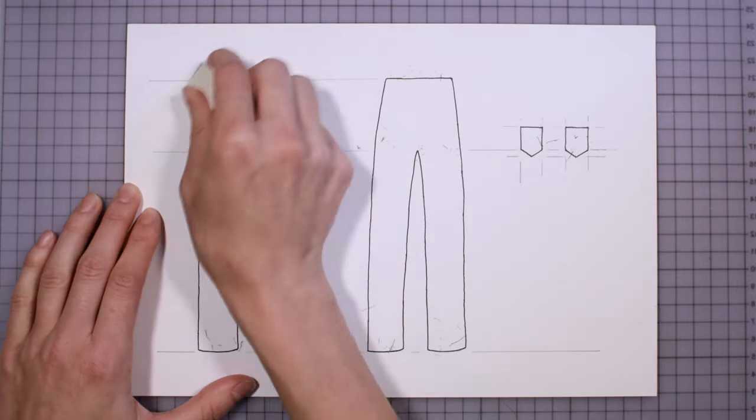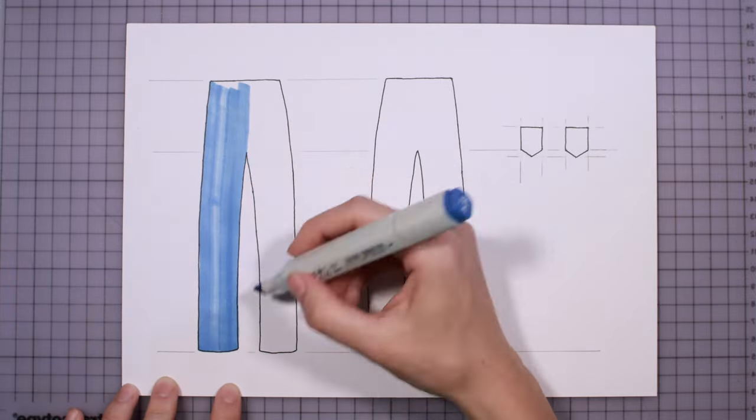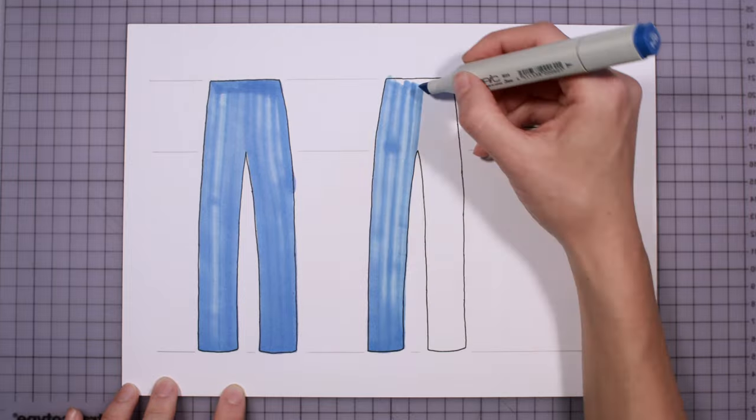Davis adds reinforcing metal rivets to his pant design, strategically placing them at points of strain, like the corners of pockets and the base of the fly.